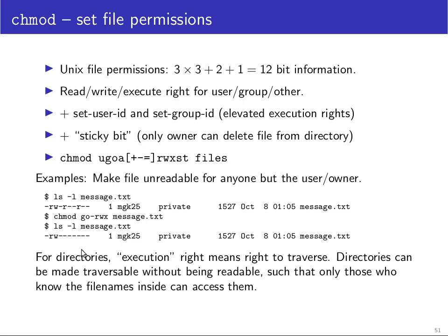I only want to mention that for a directory, the execute bit has a different meaning. The execute bit means you can traverse through that directory, whereas the R bit means you can look at the table of contents of the directory. So you can give people X but not R access to a directory, and then they can access files in there if they know the name, but they can't find out what the names of the files are. This is a little trick to get a kind of password-like protection for files if the file name is treated a bit like a password.